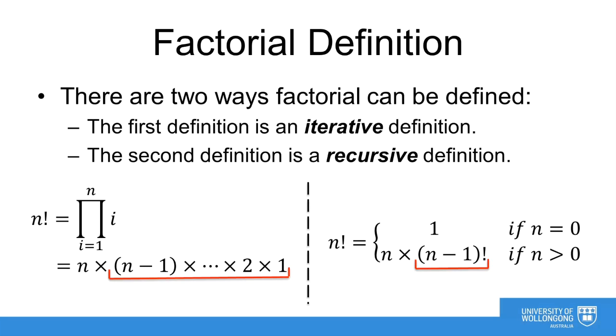This definition uses the observation that in the iterative case, we find ourselves with a copy of the solution to factorial of n-1 as a part of the solution of factorial of n.